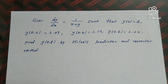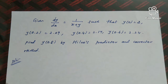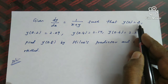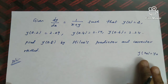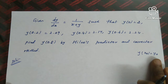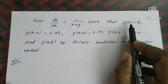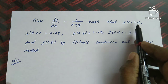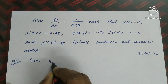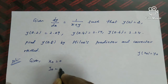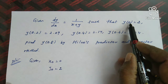For the solution, first we write the given data. We know that y(x₀) = y₀, so y(0) = 2 means x₀ = 0 and y₀ = 2.